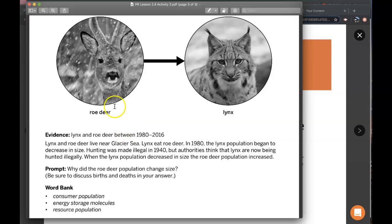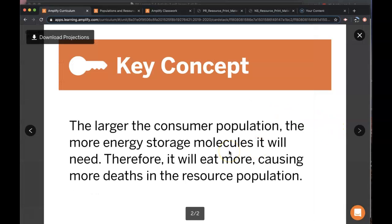Therefore, there will be more roe deer deaths and a decrease in their population size. We know that changing the size of a consumer population can affect the size of its resource population. This is because larger populations need more energy storage molecules to survive, so they will eat more,